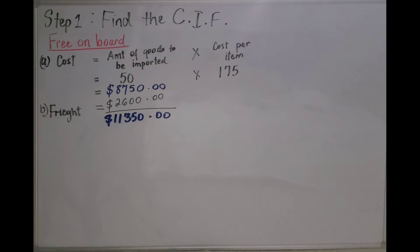Now, we need to find the freight. The freight is the cost to ship all the tablets, which is $2,600. $2,600 will be added to the $8,750 and we will get $11,350.